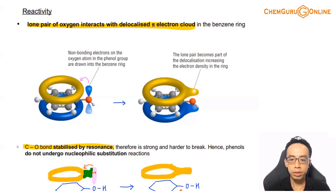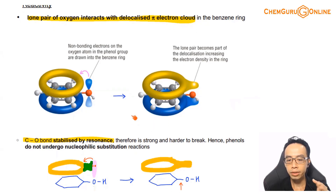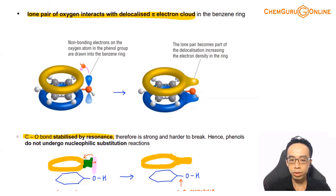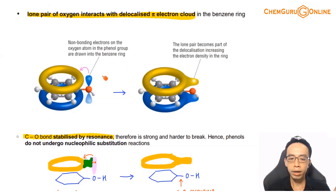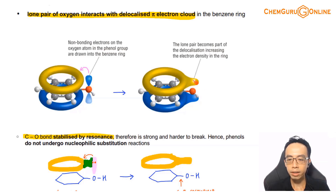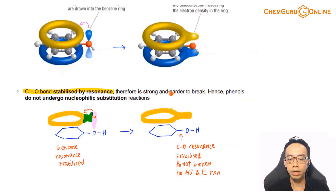When the OH group is attached to benzene, what is interesting is that the CO bond is actually stabilized by resonance. The lone pair of oxygen can interact with benzene — the delocalized pi system of the ring — and this delocalization is extended to the CO bond. So the CO bond is stabilized by resonance.